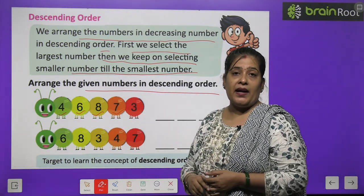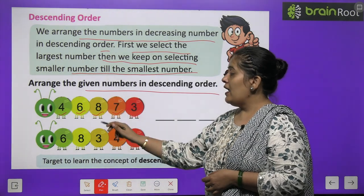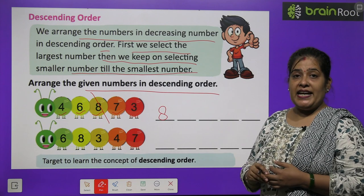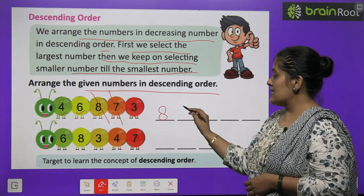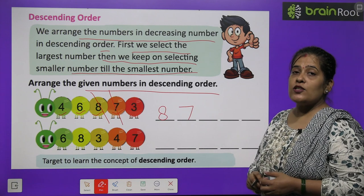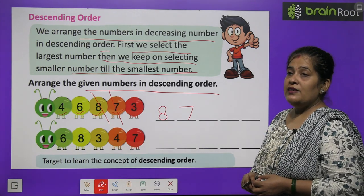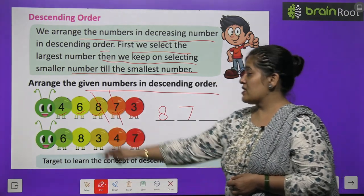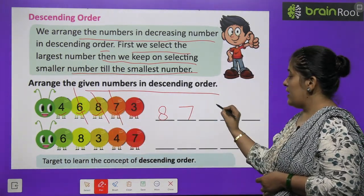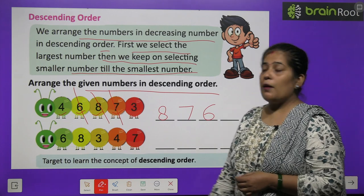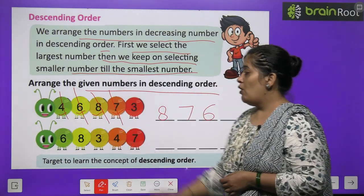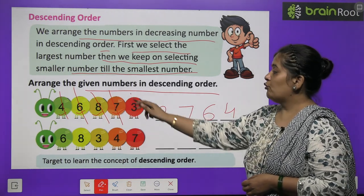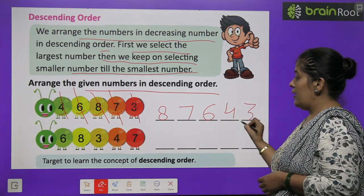In mein se sabse bada number kaun sa hai? Number 8. So we will write 8 here. Phir 8 se chhota number — number 7. Uske baad number 6. So we will write number 6 here. And the next number is number 4. We will write 4. And the smallest number is number 3. We will write 3 here.